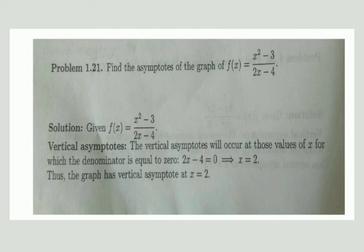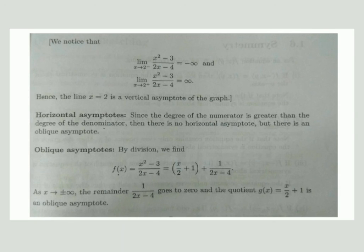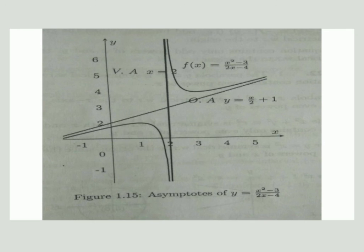The next problem: find the asymptotes of f(x) = (x² - 3)/(2x - 4). Setting 2x - 4 = 0 gives x = 2, so the vertical asymptote is at x = 2. The degree of the numerator is greater than the degree of the denominator, so there is no horizontal asymptote but there is an oblique asymptote. Dividing x² - 3 by 2x - 4 gives quotient x/2 + 1 and remainder 1/(2x-4), which tends to 0 as x → ±∞. Therefore the oblique asymptote is y = x/2 + 1.